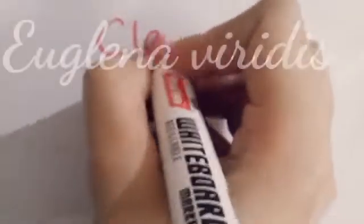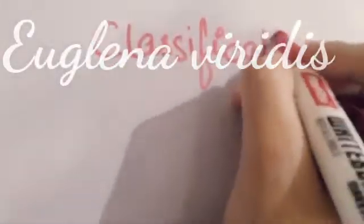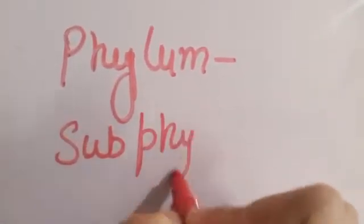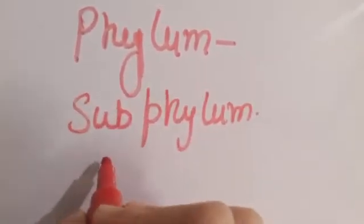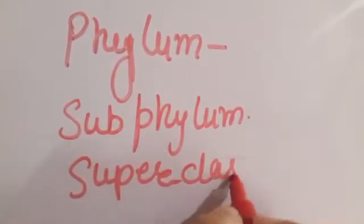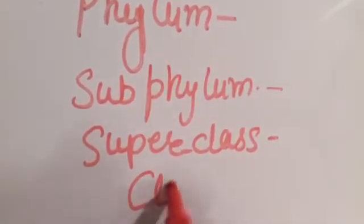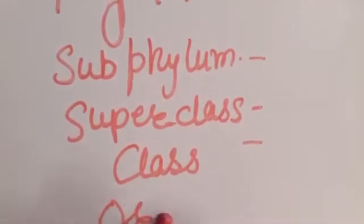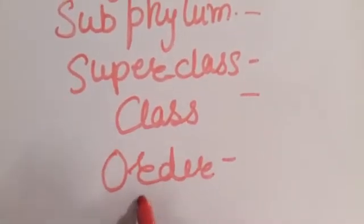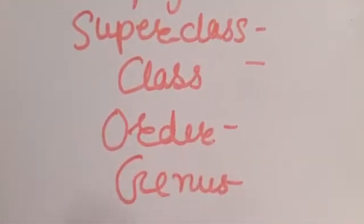Hello everyone, so we need to learn the classification of Euglena viridis firstly, then we will study its diagram. We need to know what is its phylum, what is its subphylum, the superclass, the class of Euglena viridis, and then the order, genus, and species. These are some basic rules of classification.